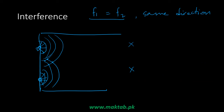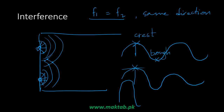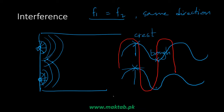At other points, crests meet crests and troughs meet troughs. At these points, the displacement from both waves adds together, and the resultant wave amplitude is the sum of the individual amplitudes — this is constructive interference. The resulting wave has a greater crest and greater trough than either individual wave.